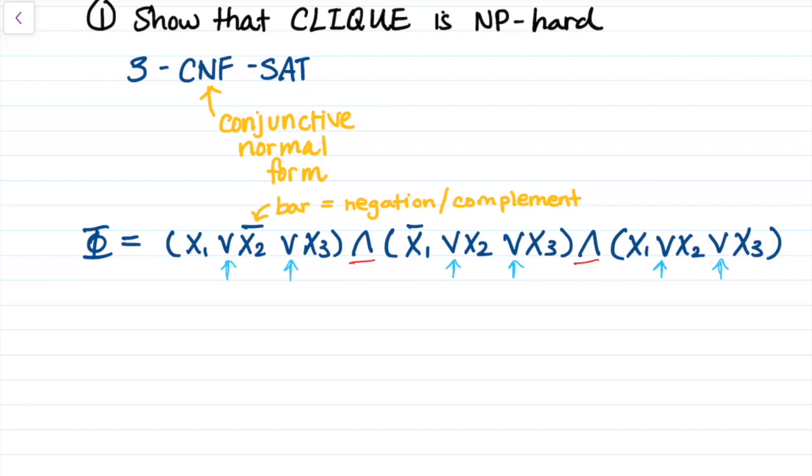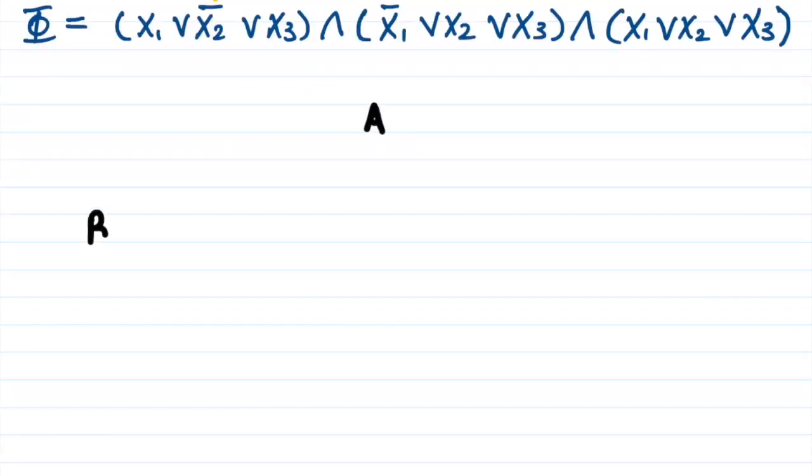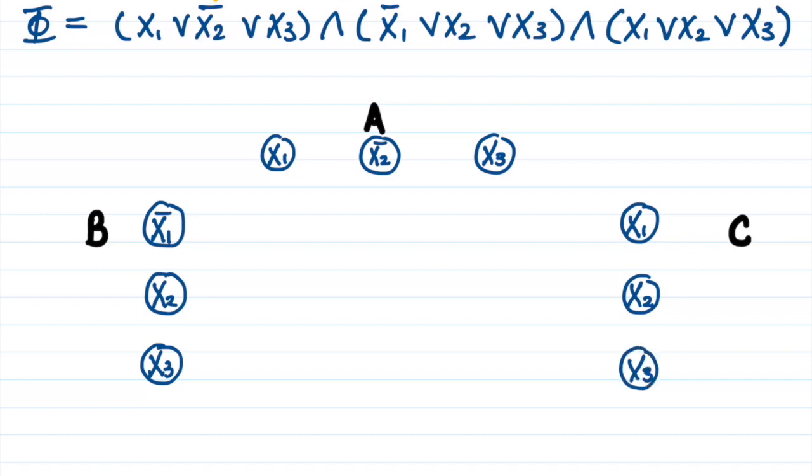We start the reduction algorithm with an instance of a 3SAT formula and construct a graph G such that phi, the formula, is satisfiable if and only if our new graph G has a clique of size K. First, for all of the clauses, we draw a triple of vertices like so. I have named the sides of our graph A, B, and C just to make it more clear for us to see where the clauses are represented on the graph. For the edges, we're going to add them to our graph in the following manner. We put an edge between two vertices if the vertices are not from the same clause and they are not the negation of each other.